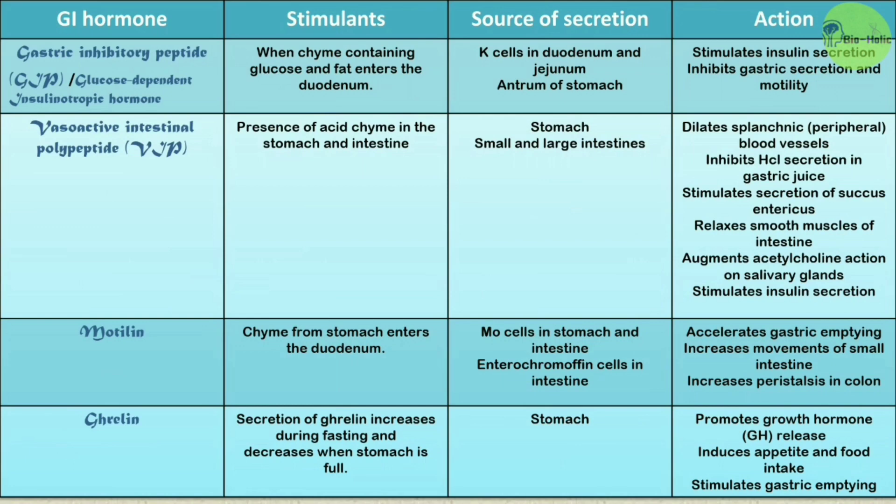Cholecystokinin increases enterokinase secretion, inhibits gastric motility but increases intestinal motility, and is also important to suppress hunger. Next is gastric inhibitory peptide (GIP), also called glucose-dependent insulinotropic hormone. When chyme containing glucose and fat enters the duodenum, GIP is secreted. The source of GIP is K cells in the duodenum and jejunum. It stimulates insulin secretion and inhibits gastric secretion and motility.